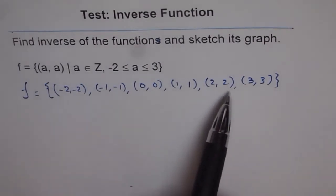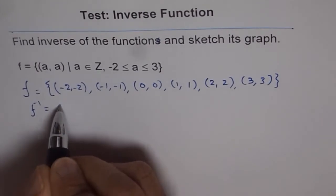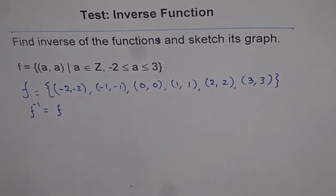So these are all invariant points, right? So you will say that f⁻¹ is actually equal to the function itself.